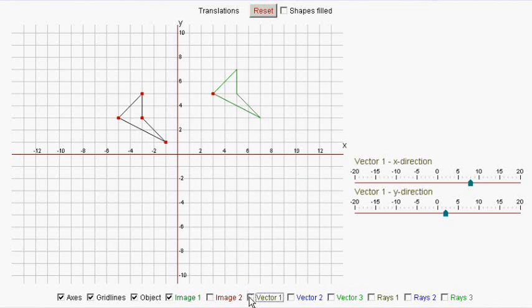But there's a much neater way of describing it. And that's what we call vector notation. And what we do is we write it just as two numbers, eight and two.